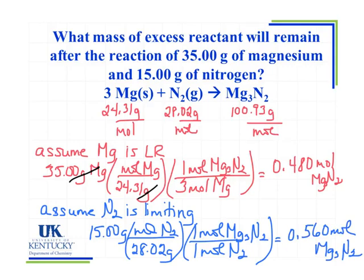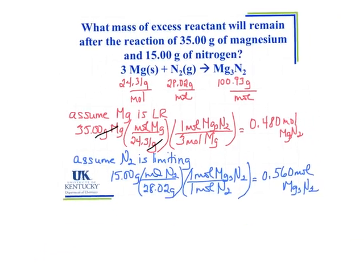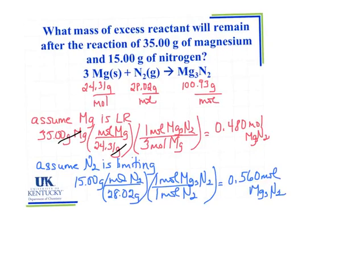This tells me that magnesium is actually my limiting reagent. Even though it's present in the larger amount, it's still the limiting reagent because it produces the least amount of product — and that's what I'm concerned about: which species produces the least amount of product. So the magnesium is limiting. Now I need to figure out how much nitrogen I need to react with 35 grams of magnesium.